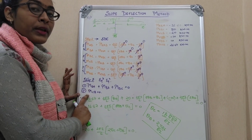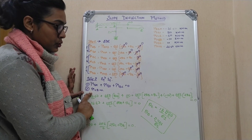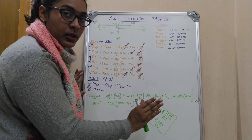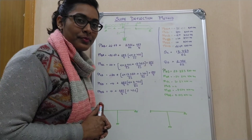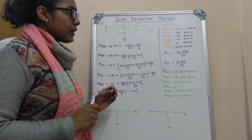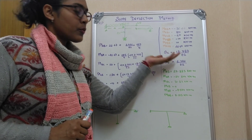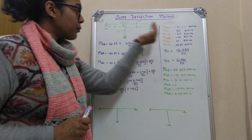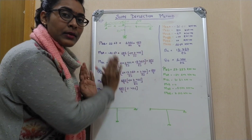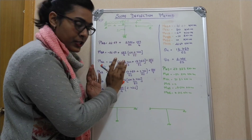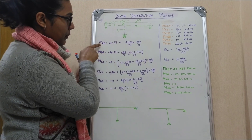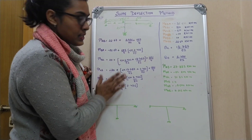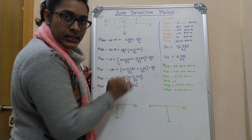We have calculated the slopes, and now we simply substituted theta_B and theta_C back into the slope deflection equations. By substituting these values, the EI terms cancel out and we get the final numerical values for all the joint moments.